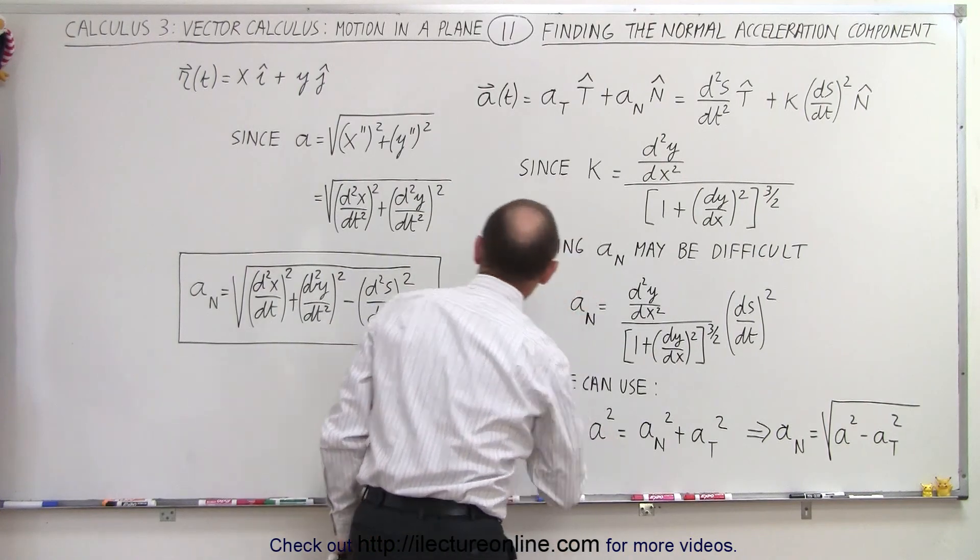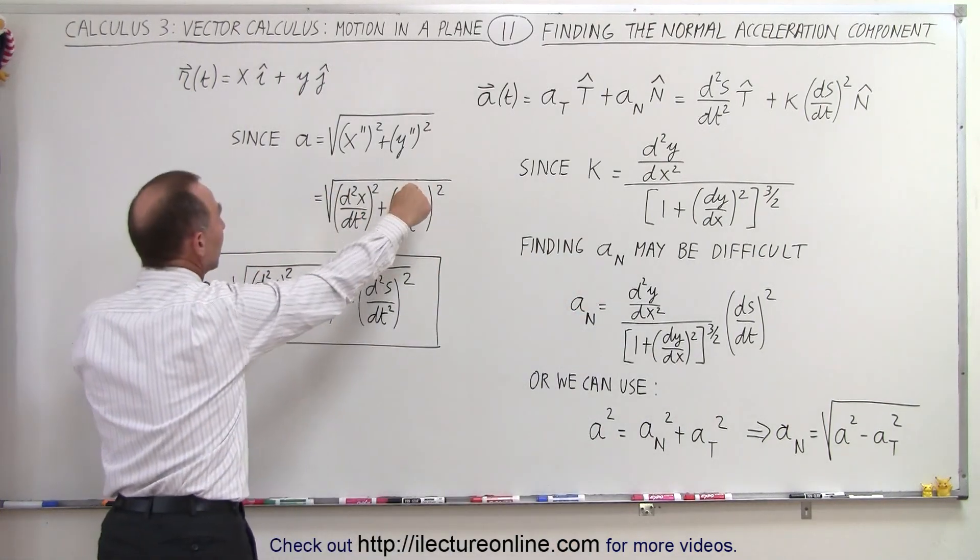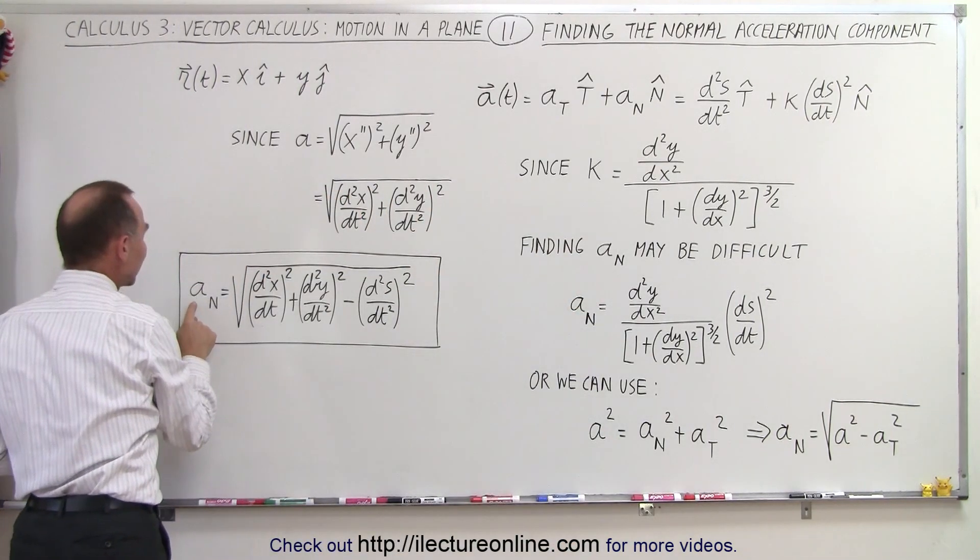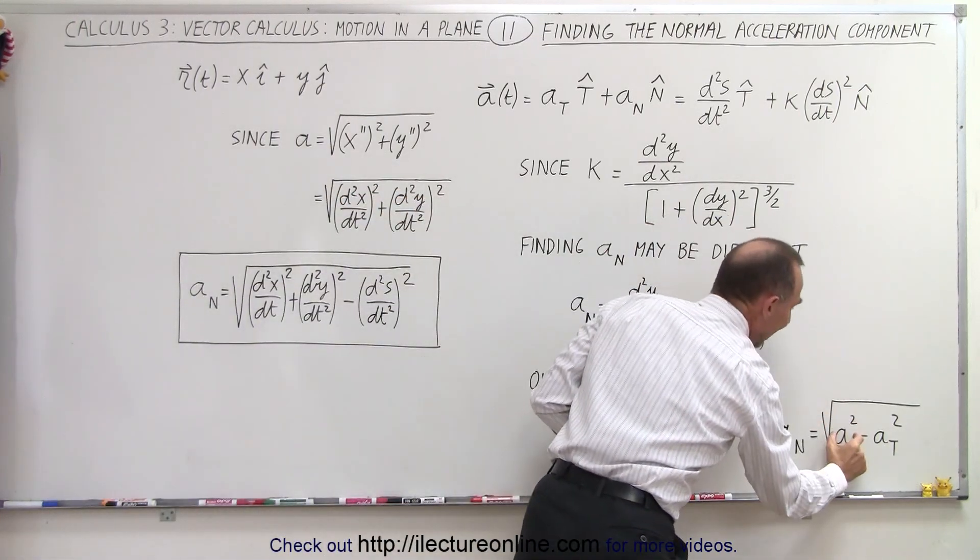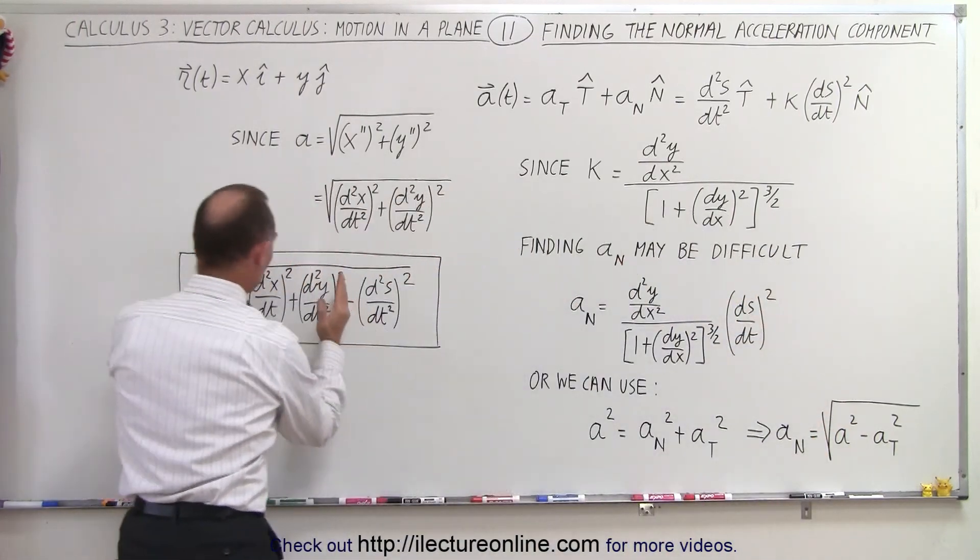And of course if we then square that magnitude, the square root symbol goes away, but now when we find a sub N, that is equal to the square root of the a squared, a squared is right here.